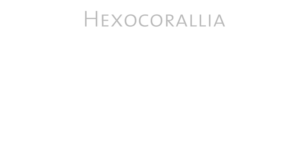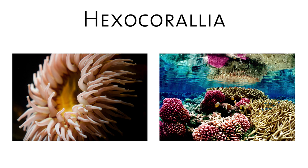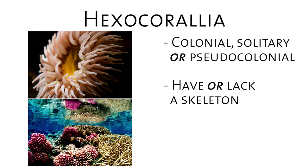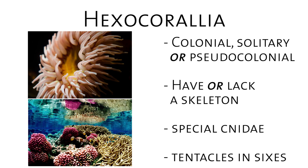This group divides into two further groups: the octocoralia and the hexacoralia. Sea anemones belong to the hexacoralia. Sorry for all this classification — but that's what we do. Hexacorals show an amazing diversity of forms. Within hexacorals you have corals that form coral reefs, but they can also be colonial, solitary, or pseudo-colonial. They can have a skeleton or lack one. They are characterized by having tentacles in multiples of six.